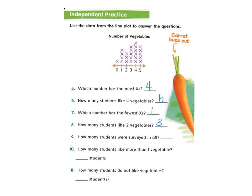How many students were surveyed in all? We can look at how many X's there are altogether. Starting here: one, two, three, four, five, six, seven, eight, nine, ten, eleven, twelve, thirteen, fourteen, fifteen, sixteen, seventeen, eighteen, nineteen, twenty, twenty-one, twenty-two, twenty-three, twenty-four. There were 24 students surveyed in all.